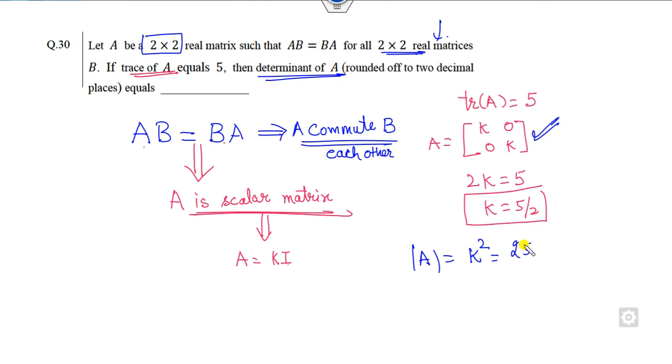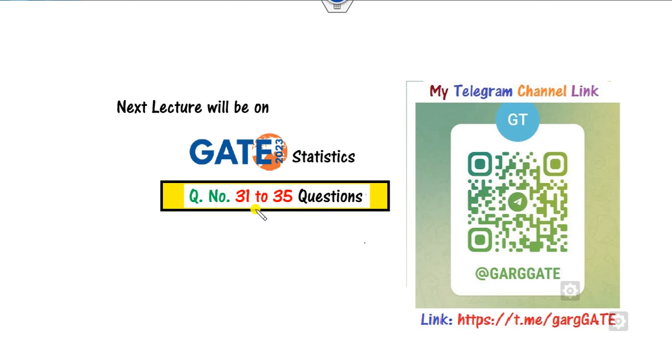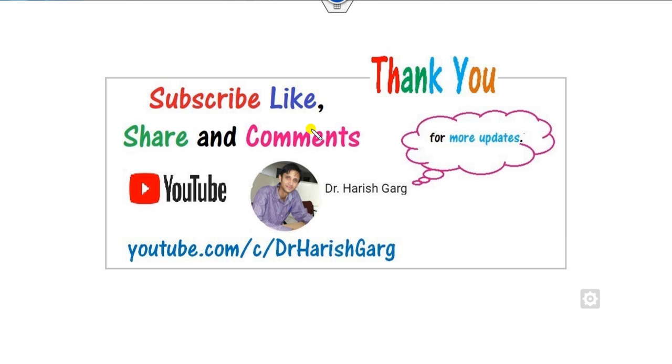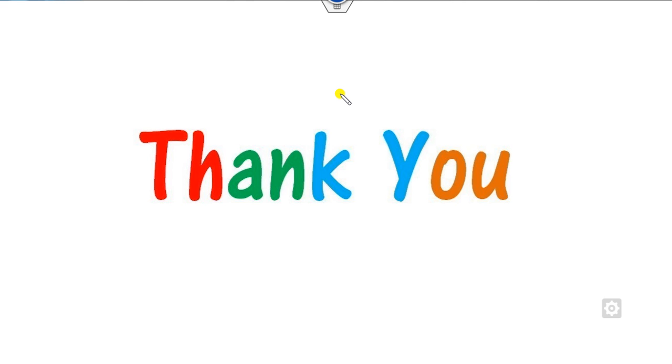That's a very simple trick. Remember, always whenever A and B are commute to each other, A is always a scalar matrix, that is k times I. So I hope you can simply learn these three questions in a very simple manner. We will see the next lecture on the next five questions related to GATE 2023 statistics. Till then, you can simply like, share, and comment this video with your friends. Best of luck students, happy learning.